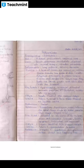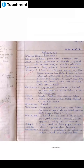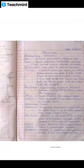Inflorescence: long peduncle, solitary capitulum. Two types of florets are present on the inflorescence: ray florets and disc florets.